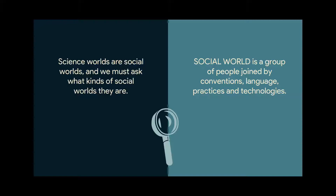We must also remember that the world of science is a social world — a group of people joined by conventions, language, practices, and technologies — and the science community has that. As people studying STS, it's important to ask: what kind of social world is the scientific community? Is it an objective, neutral group always considering quality of life? Or are they also social and political animals competing for a finite number of resources to conduct the research they want to do?